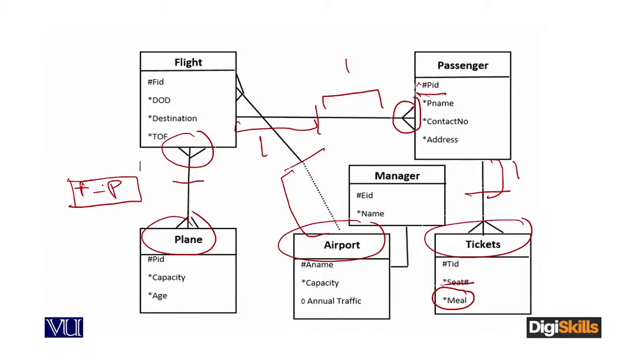The last entity is manager. This is purely a one-to-one relationship: one airport will have exactly one manager, with optionality one and cardinality one, and one manager manages exactly one airport. It is a very rare relationship, but it is there. You will have more understanding of this concept when you implement it.